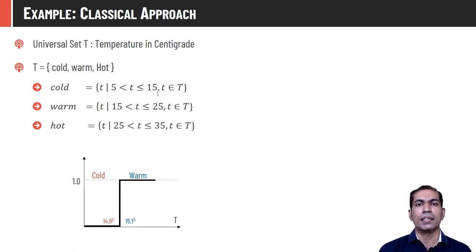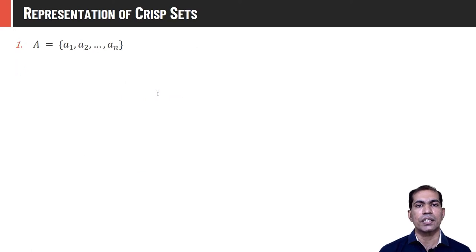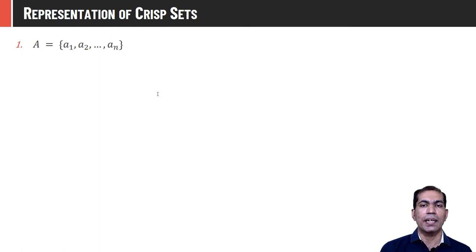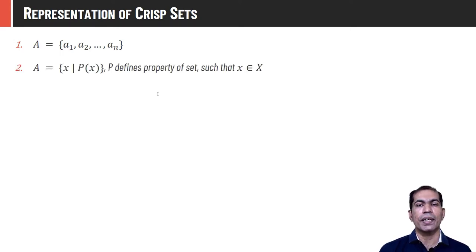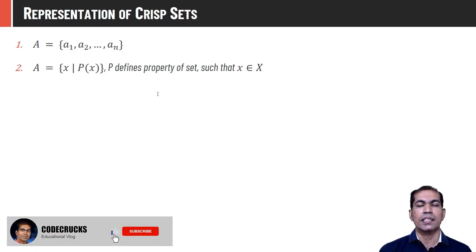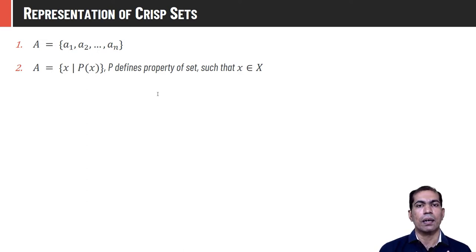Fuzzy sets will help us handle this problem. Various representations of crisp sets: one way is the exhaustive approach, listing all elements. If the set is small, this is useful, but if the set is very large it is time-consuming. A better way is to define the set using the property of elements — for example, A = all elements x satisfying some property p.